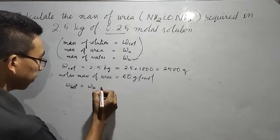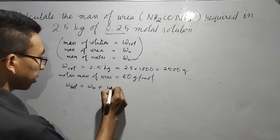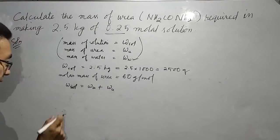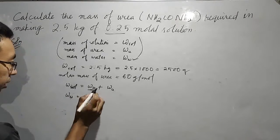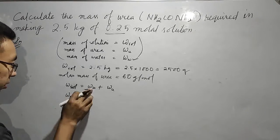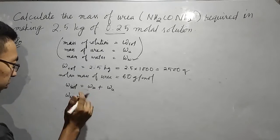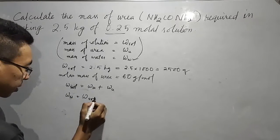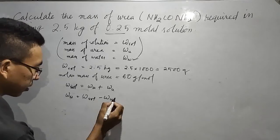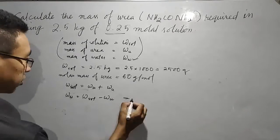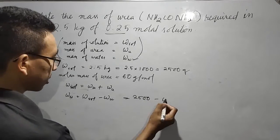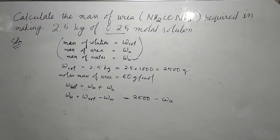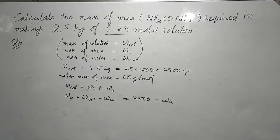So mass of solvent, that is W_w, will be equal to mass of solution minus mass of solute, which is equal to 2500 minus W_u. Now moving on to the molality.